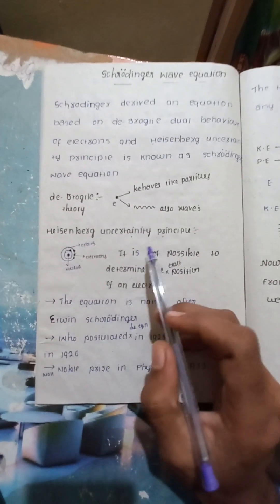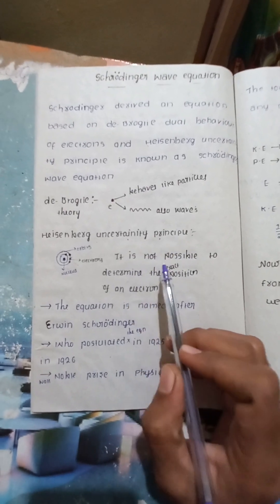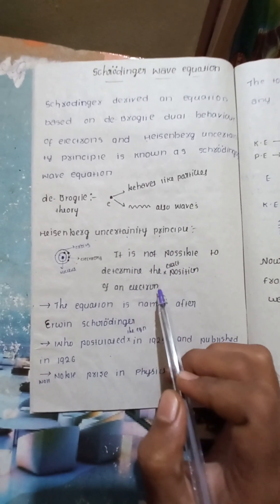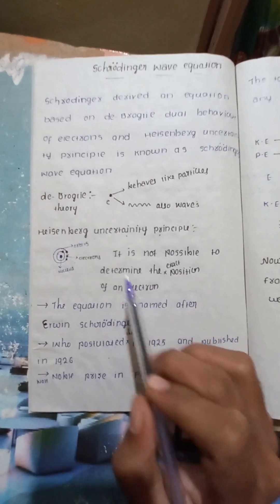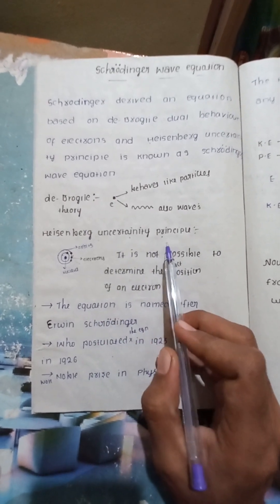The Heisenberg uncertainty principle states that it is not possible to determine the exact position of an electron. This is the Heisenberg uncertainty principle.